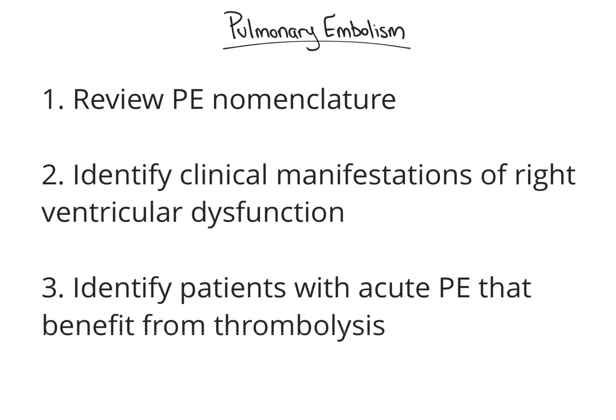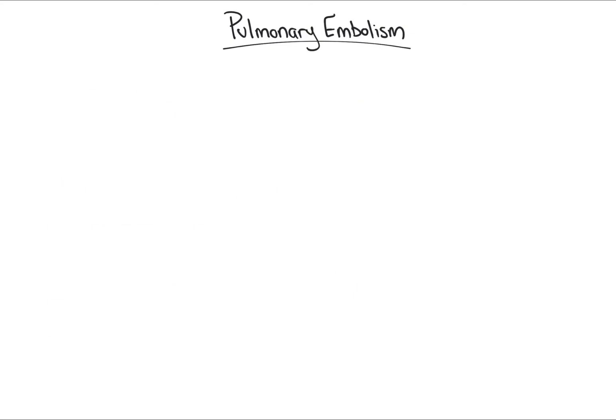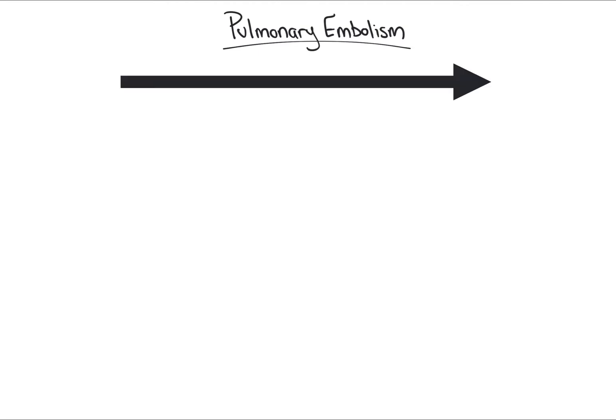First, let's start with PE nomenclature. Acute pulmonary embolism exists on a spectrum. On one end is low-risk, and on the other end is high-risk, hemodynamically unstable, or massive PE. All terms can be used interchangeably. For the purposes of this video, we will use the term massive PE.